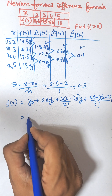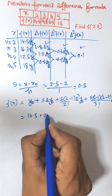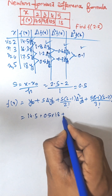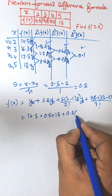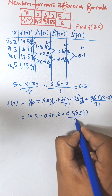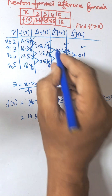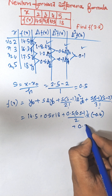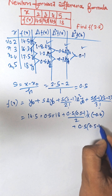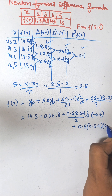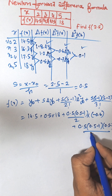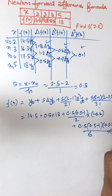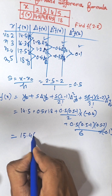Substituting: y₀ equals 14.5, s is 0.5 into del y₀ which is 1.8. Then 0.5 times (0.5 minus 1) over 2! into del square y₀ which is minus 0.6. Then 0.5 times (0.5 minus 1) times (0.5 minus 2) over 3! into del cube y₀ which is minus 0.1. The final answer is approximately 15.46.